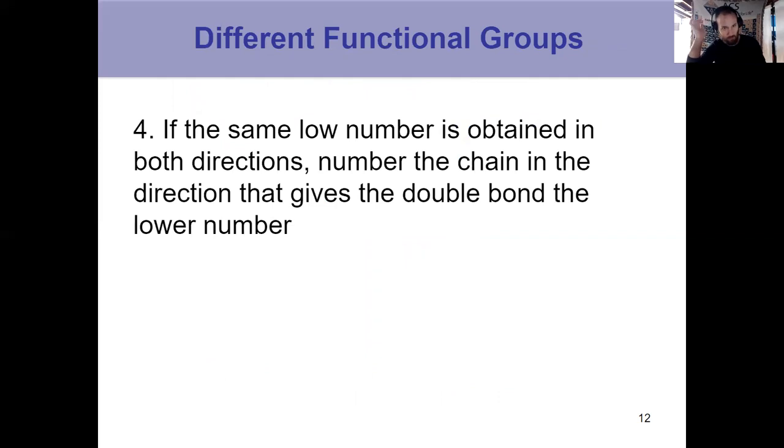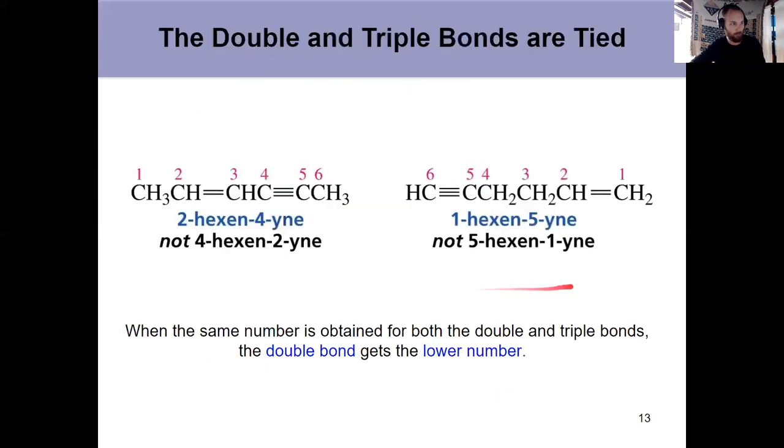If you get that same low number going both ways, then you give the lower number to the double bond, only if it's a tie. You always look for the lowest possible number, but if you can go left to right or right to left, and you get the same low number both ways, then you give it to the double bond, but only if there's a tie, which is what this slide here is showing us. You can look at those two for practice on slide 13.